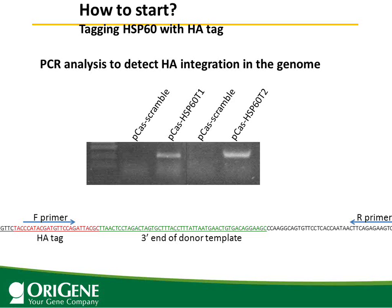We also used genomic PCR to detect if HA was integrated into the genome. One primer is designed within the HA tag region, and another primer is placed downstream of the 3-prime end of the donor template to avoid false positives from donor oligo contamination. Consistently, both target 1 and target 2 show PCR products, but target 2 produces more — consistent with the Western blot data.